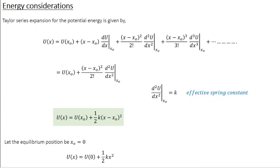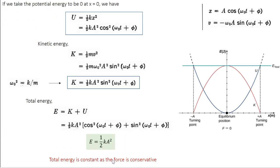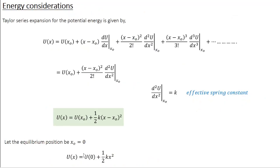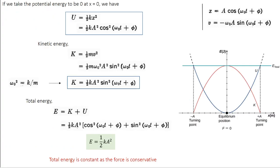In the case of a harmonic oscillator, the second derivative of the potential energy at the equilibrium position is nothing but the effective spring constant k. When you make this substitution, your equation becomes U(x) = U(x₀) + ½k(x − x₀)². Choosing x₀ = 0 as the equilibrium position and taking U(0) = 0, you get the standard form: U(x) = ½kx².